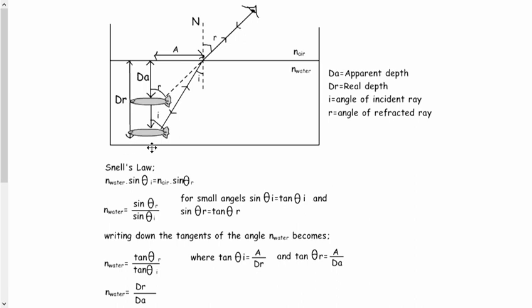So let's take a look at this example here. So you've got this object here, and there's light coming off of it, being reflected, and it's coming up to the surface. When it reaches the barrier between water and air, it's going to get refracted outwards.